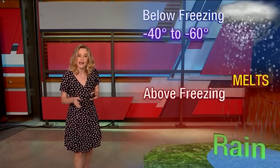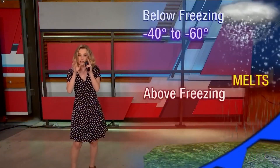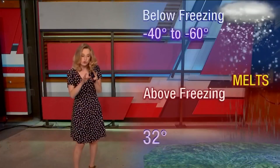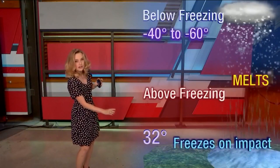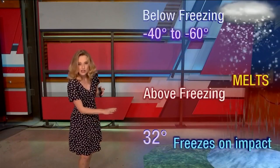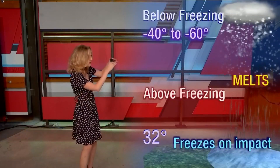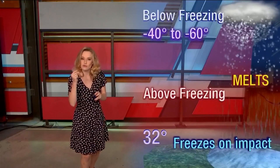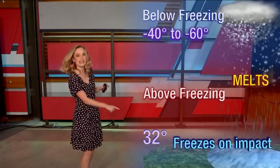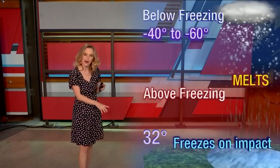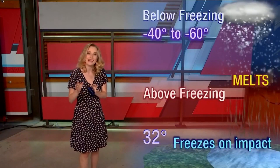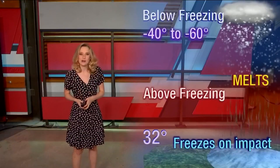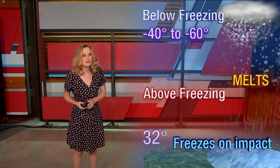But every now and then, if we get a strong cold front, that'll result in a very cold layer close to the ground that allows that melted snow to immediately freeze on impact and you'll see ice on the ground. In fact, that happened recently where we saw a little bit of freezing rain one Tuesday morning.